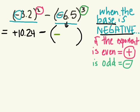What's 6.5 times 6.5 times 6.5? Negative 274 decimal 625, good. So we're subtracting a negative.